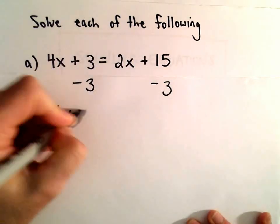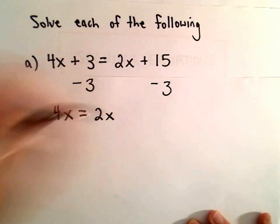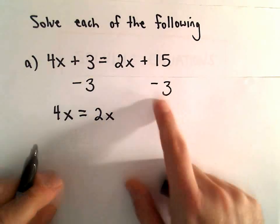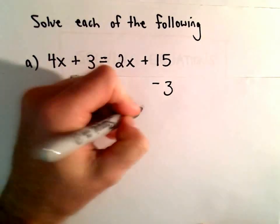That'll leave me with 4x equals 2x. Let's see, positive 15 minus 3 is going to be positive 12.